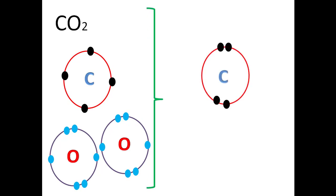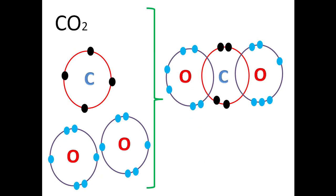Covalent bonding. We start drawing carbon and oxygen. Sharing one electron of carbon with one electron of oxygen on each side gives us two electrons in each shared area. But counting the electrons around carbon gives only six, and oxygen has seven — so all atoms are still not stable. We need to share more electrons.